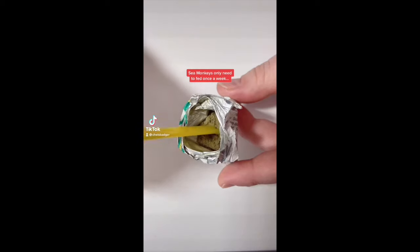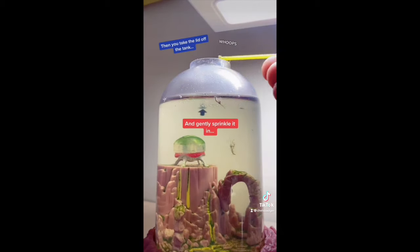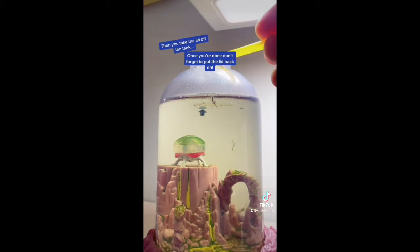Sea monkeys only need to be fed once a week. Use the sea monkeys feeding spoon to scoop a tiny amount of sea monkey grow food. Then you take the lid off the tank and gently sprinkle it in. Once you're done, don't forget to put the lid back on.